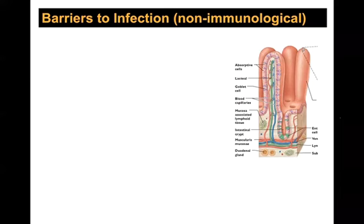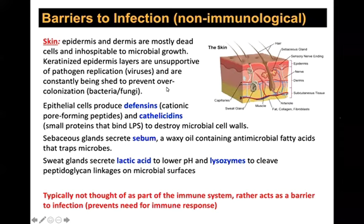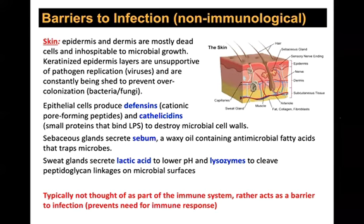Student question: Are all barriers to infection nonspecific — are the defensins poking holes in all microbial cell walls or only harmful ones? It's doing it to all of them. It's not preventing things from landing on you; if you swabbed your skin you'd certainly find bacteria. It's just trying to keep the numbers down. Defensins are a whole family: some work better on gram-negative, some on gram-positive, some on fungi, some even on viral membranes. It's making lots of this material hoping to minimize the amount of microbes on your skin.